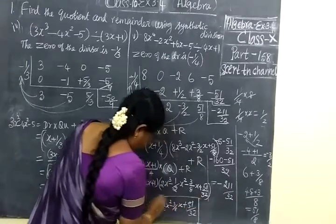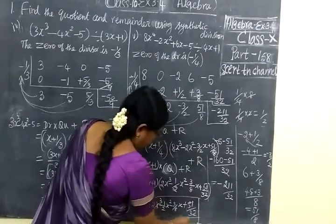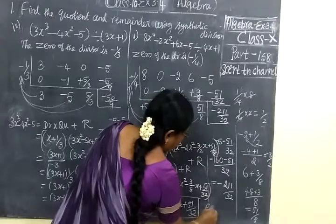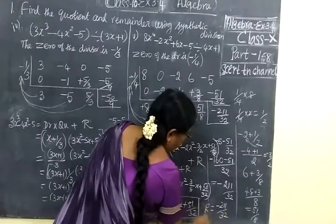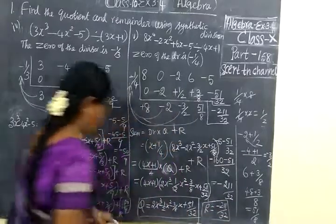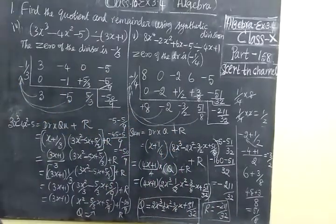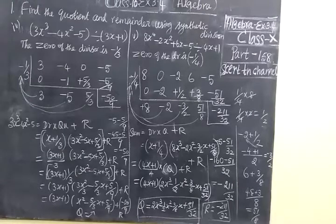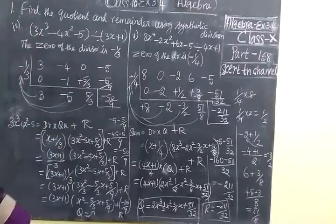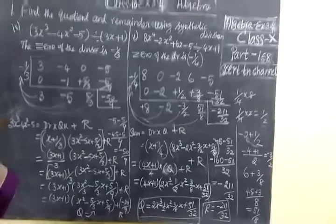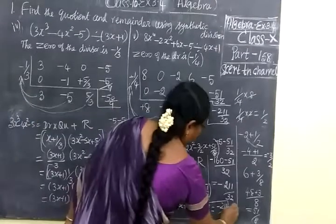You will have to rewrite the quotient. Then plus remainder, which has been minus 211 by 32. So once again we check it. Quotient: 2x cubed, then minus 1 by 2 x squared, minus 3 by 2 x plus 51 by 32. Then the remainder is minus 211 by 32.